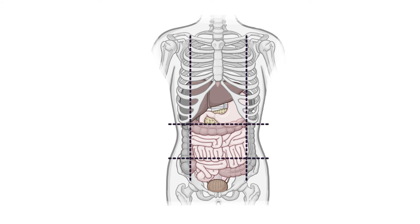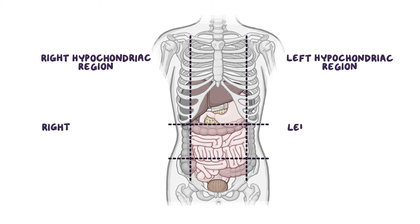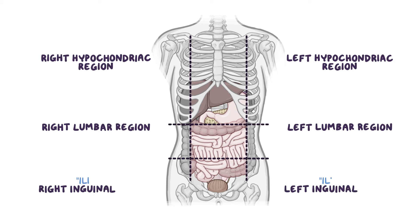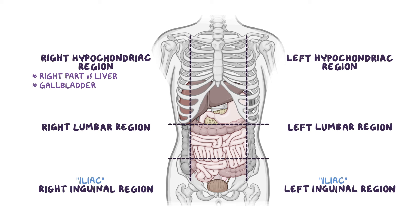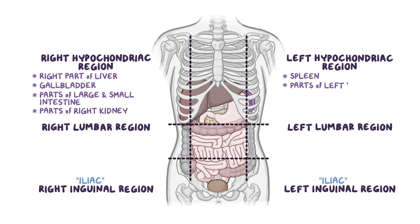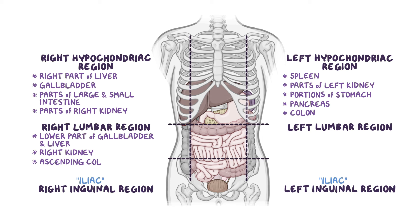On either side of these central regions, going from top to bottom, there are the right and left hypochondriac regions, the right and left lumbar regions, and the right and left inguinal or iliac regions. The right hypochondriac contains the right part of the liver, gallbladder, large and small intestine, and parts of the right kidney, whereas the left hypochondriac region contains the spleen, parts of the left kidney, and portions of the stomach, pancreas, and colon. The right lumbar region contains lower parts of the gallbladder and liver, right kidney, and ascending colon, while the left lumbar region contains portions of the descending colon and left kidney.